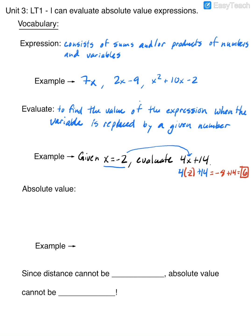The new thing we're going to start talking about is absolute value. Absolute value is the distance from 0 for any non-zero number, which is always positive.